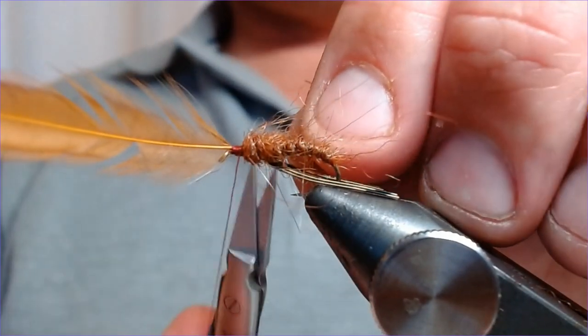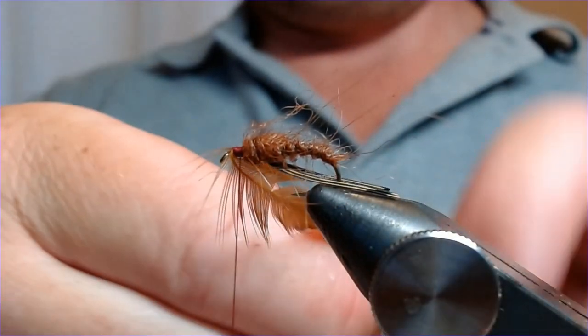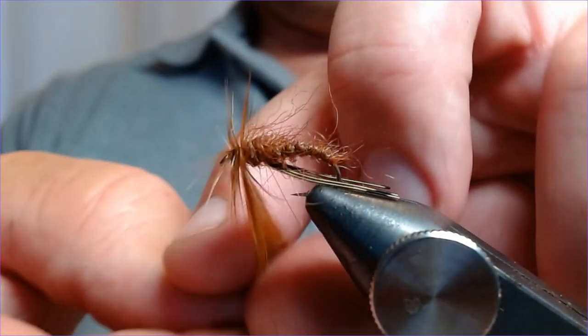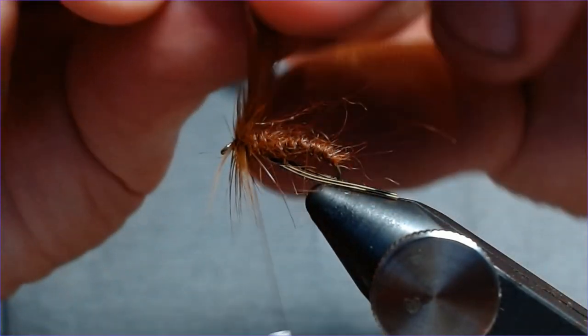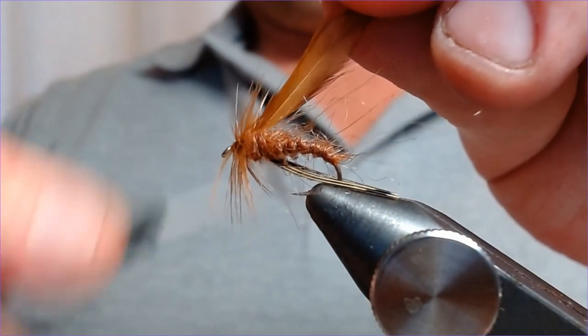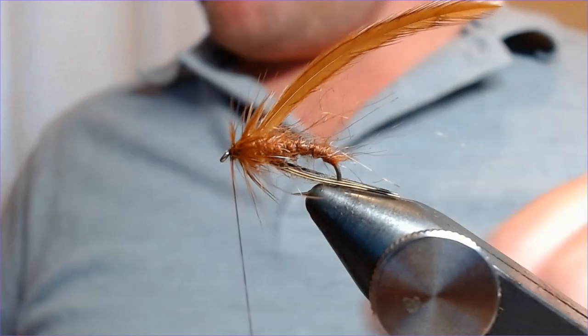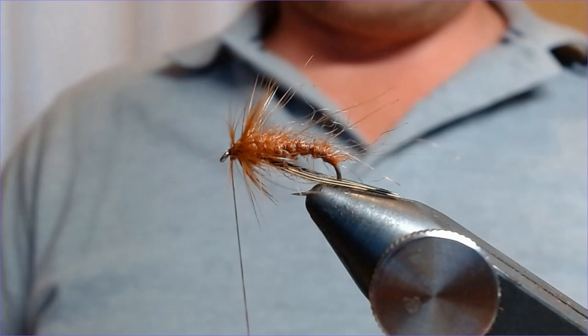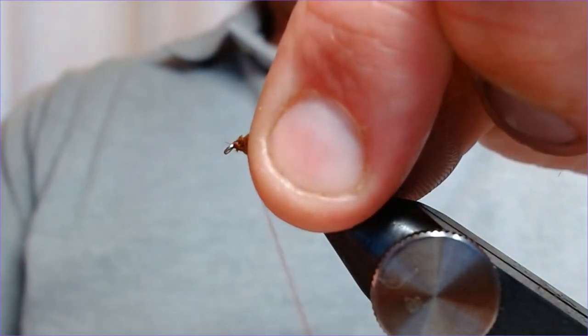Then we're just going to put a few turns of this in. We're not going to go nuts on it. One, two, three turns should be ample. Then just bring your thread back up through the hackle and just trap it just behind the eye there. That just catches everything. Trim off the excess, not taking too much of your hackle with it. Then just work that back a little bit to give a bit of space here.